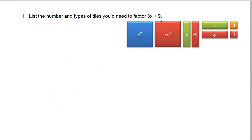To factor 3x plus 9, we would need 3 of the positive x tiles. And then we would need 9 of the positive 1 tiles, and we would organize them into a rectangle. Then write the dimensions of the rectangle.